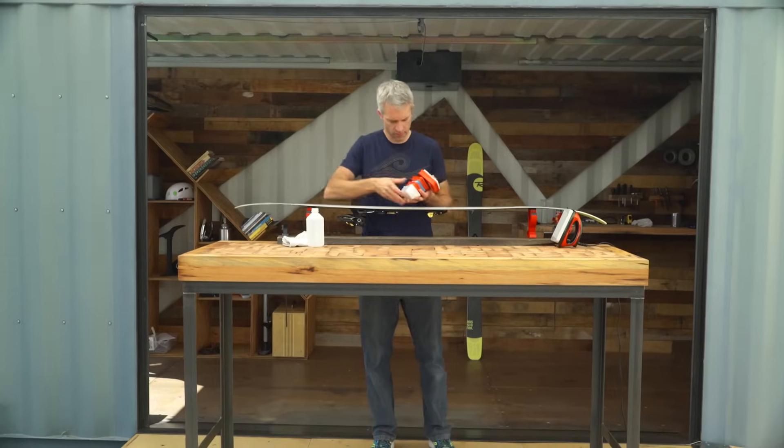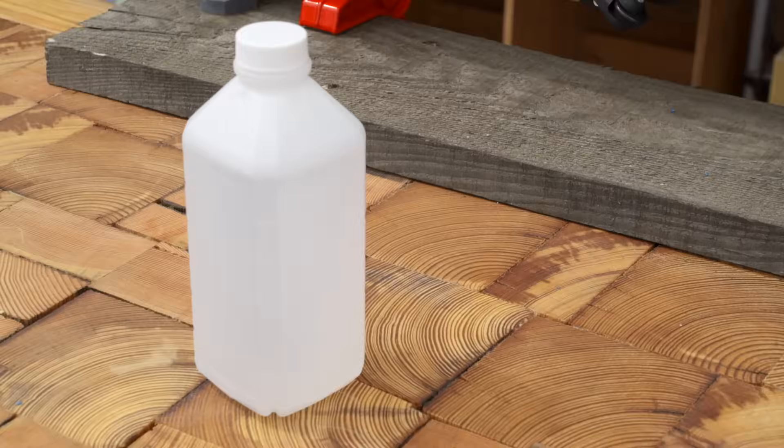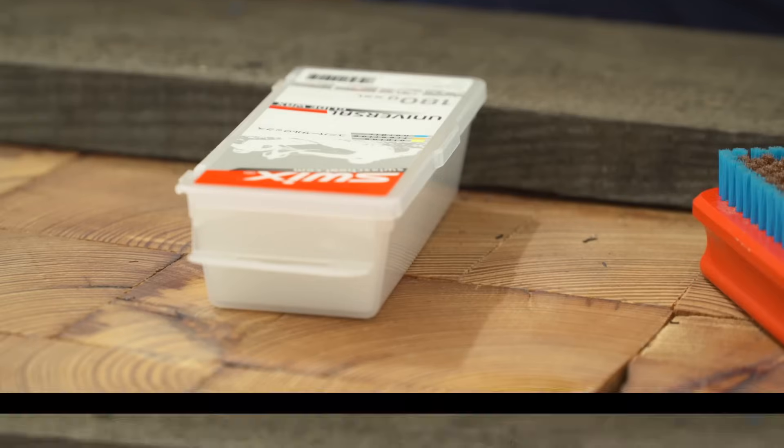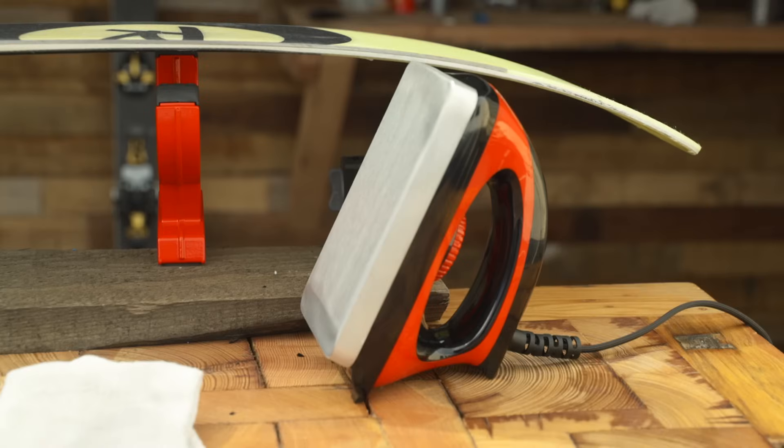Waxing your skis is the best way to protect them and keep them performing at their peak. You'll need clean towels, rubbing alcohol, your favorite wax, a plastic scraper, a set of brushes, and a waxing iron.